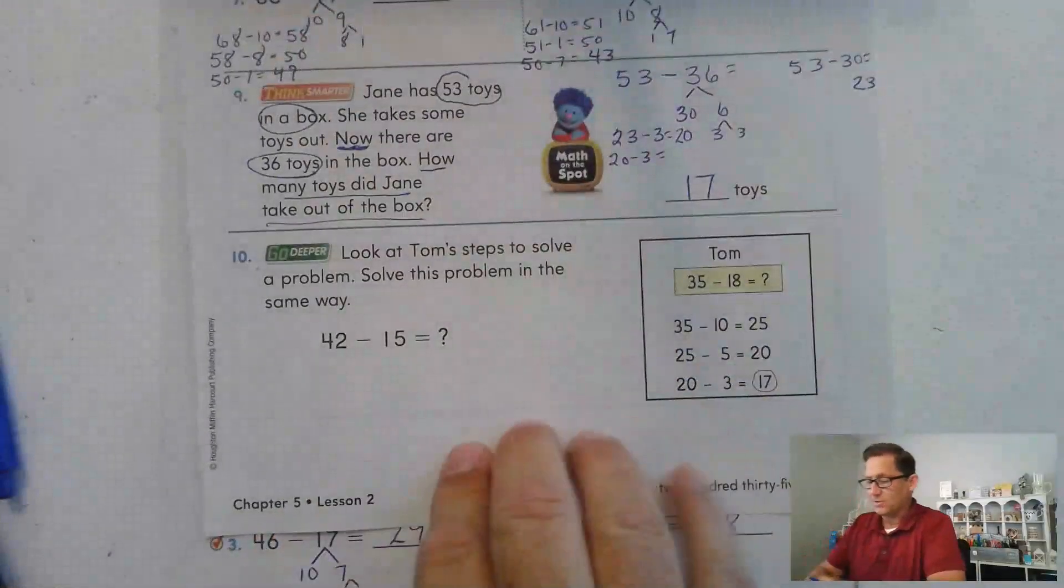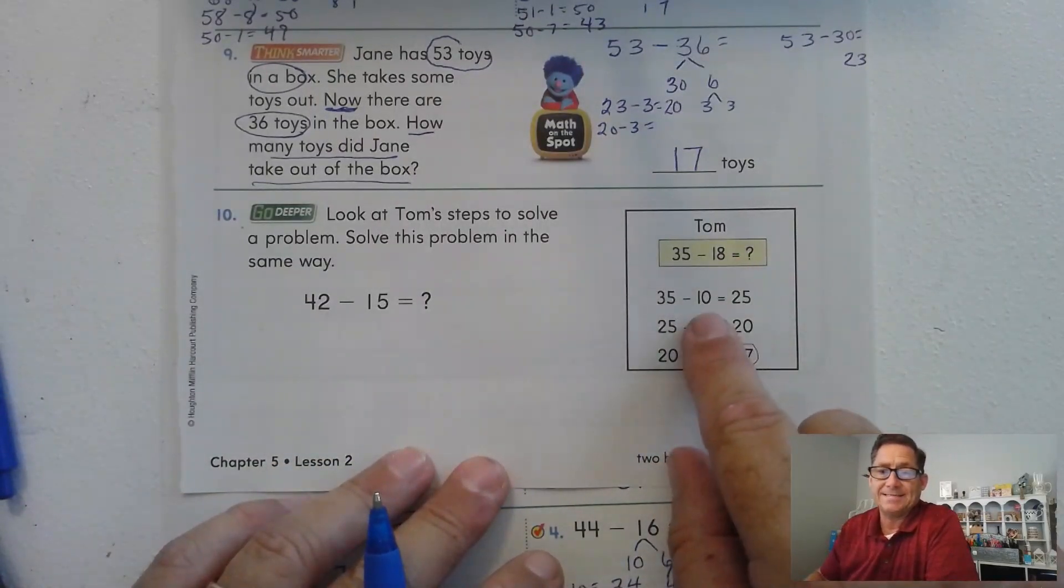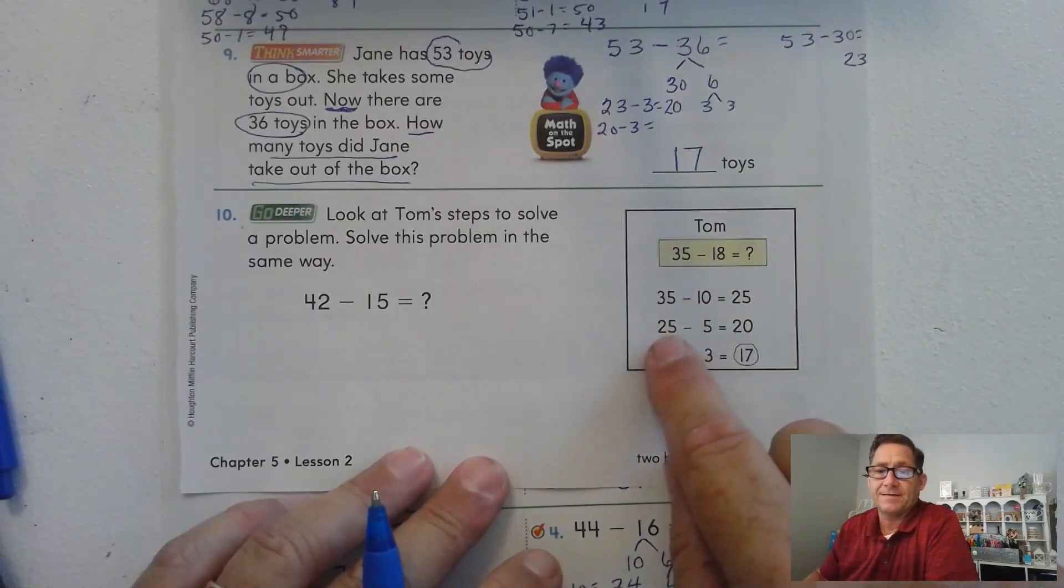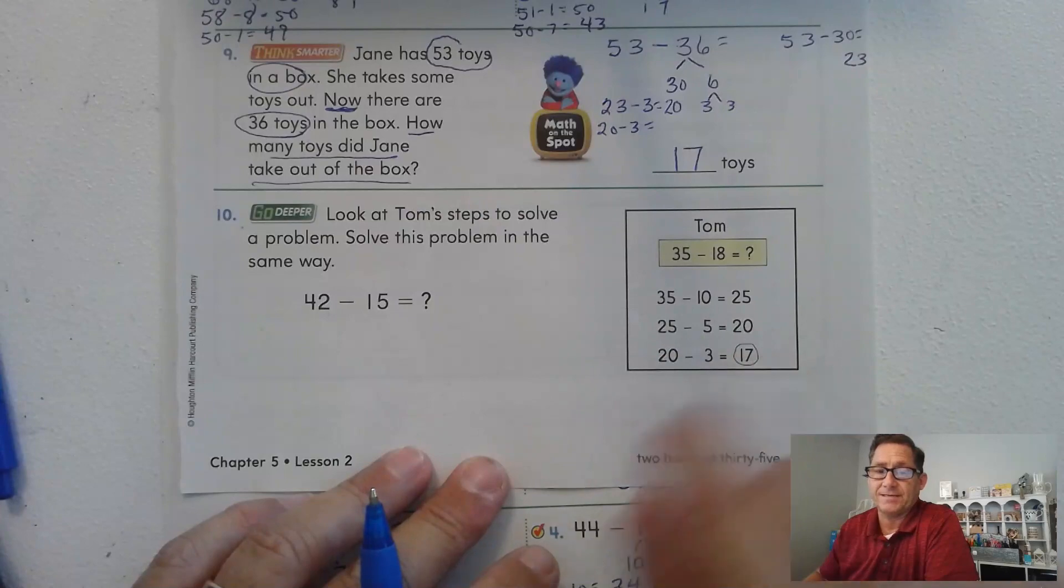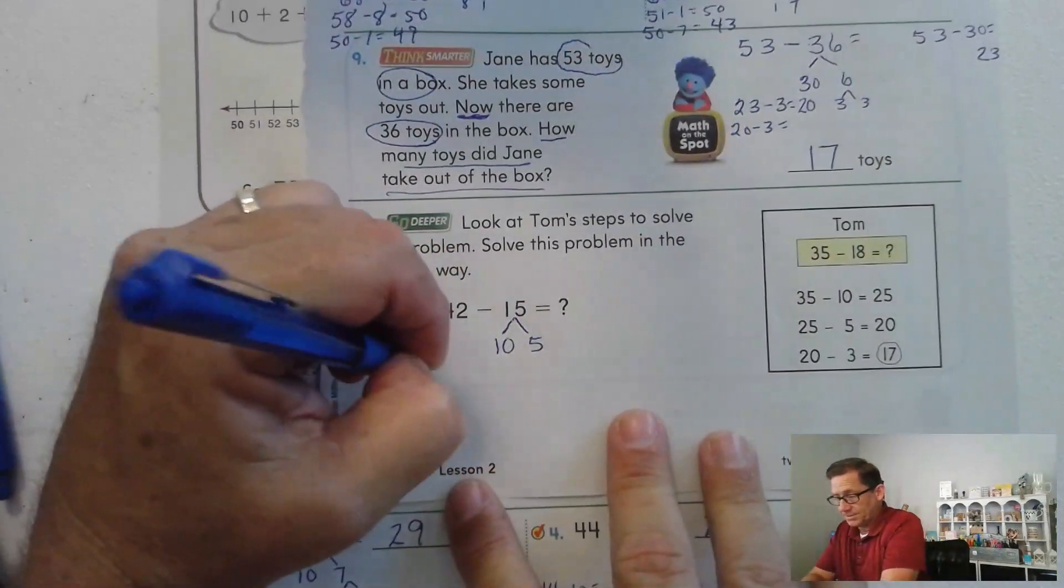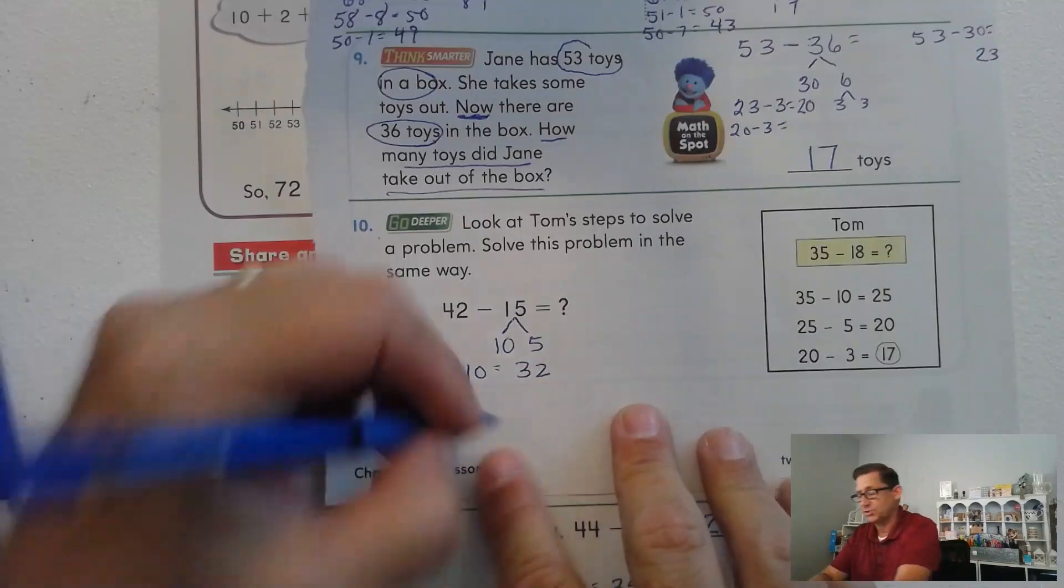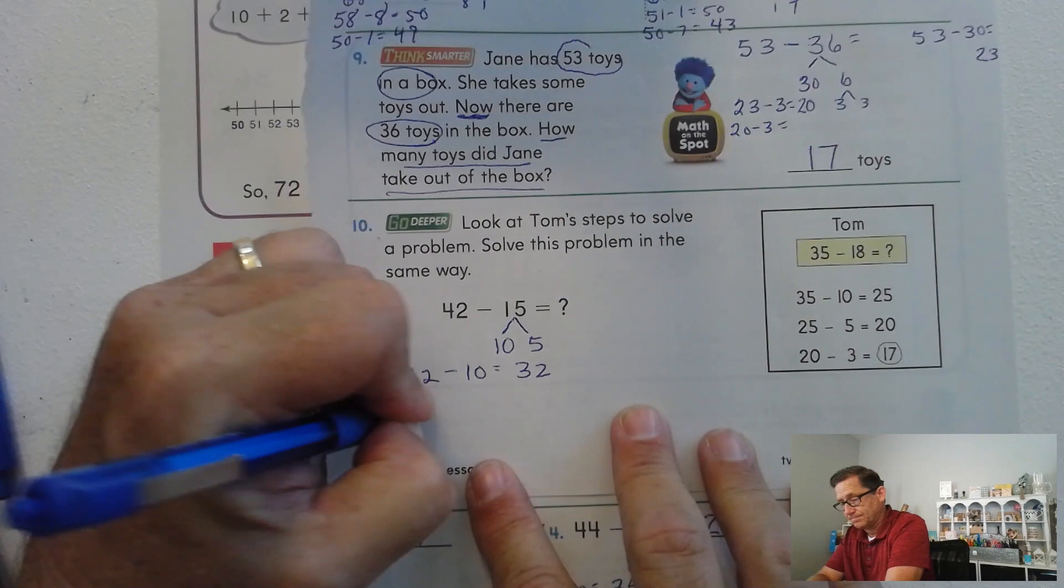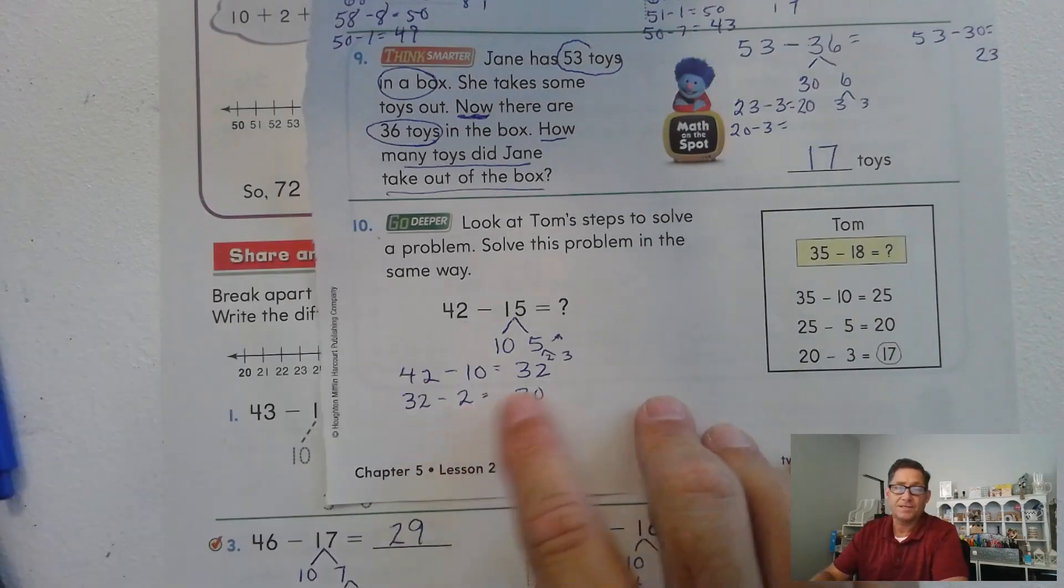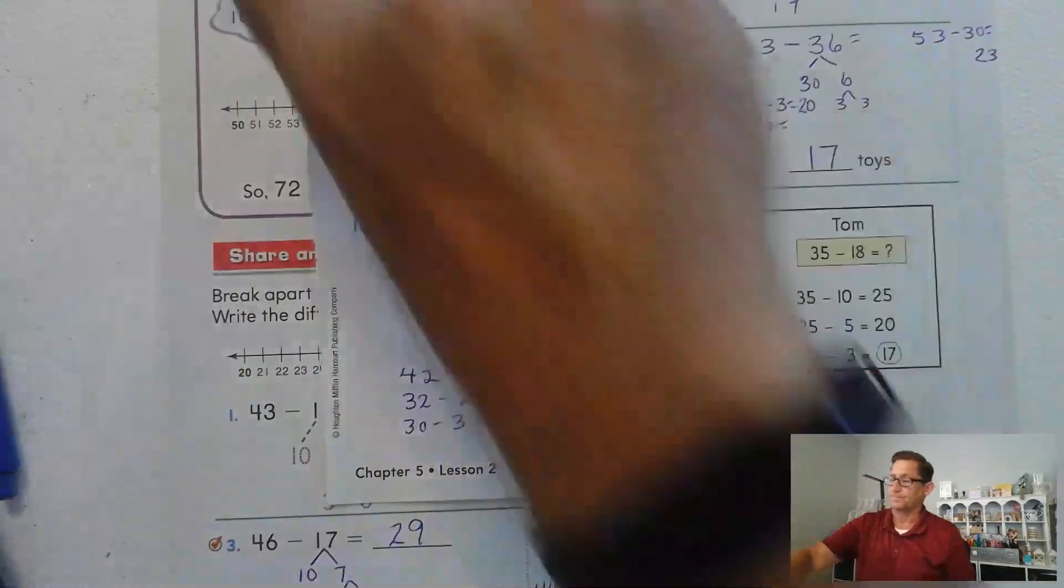Number 10. Look at Tom's steps to solve a problem. Solve this problem in the same way. 42 minus 15. So this is Tom's. He broke 18 into 10. And 35 minus 10 was 25. Then he said 25 minus 5. That's going to give me a 10. And then he had 3 left because 5 plus 3 is 8. And 20 minus 3 is 17. So we can do the same thing. We're going to have 10 and 5 for 15. 42 minus 10 is 32. What do we subtract from the 32 to make it into a 10? 2. Breaking 5 into 2 and 3. 32 minus 2 is 30. And 30 minus 3 is 27.